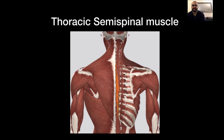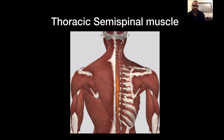The thoracic semispinalis muscle originates from the transverse processes of T6 to T12 and inserts at the spinous process of C6 to T4. When they contract, they pull the trunk backwards and also rotate the trunk.